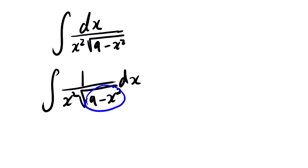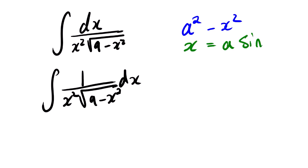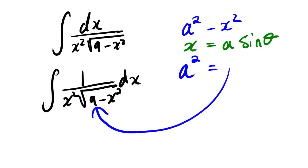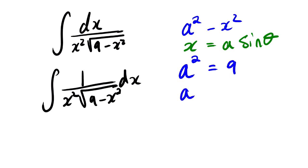Firstly we look at this expression. We can see that it's in the form of a squared minus x squared. Based on lesson 101, we know that whenever we have this expression we let x equal to a sine theta. In this case we need to find the value of a, since a squared equals 9. We take the square root of both sides: a equals 3. Therefore our equation is x equals 3 sine theta.